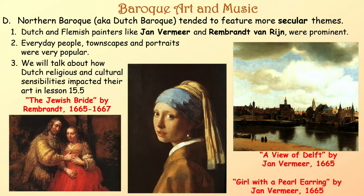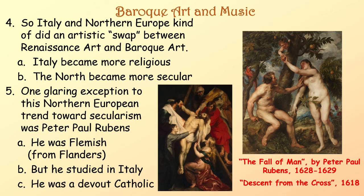Northern Baroque, also known as Dutch Baroque, tended to feature more secular themes. Dutch and Flemish painters like Jan Vermeer and Rembrandt were prominent, featuring everyday people, townscapes, and portraits. Italy and Northern Europe kind of did an artistic swap — in the Italian Renaissance those artists were more secular, but now Italy is becoming more religious and it's the North that's becoming more secular.